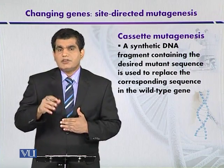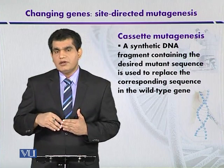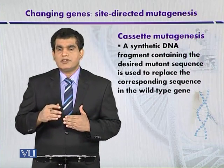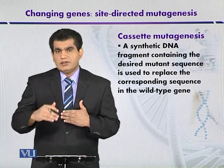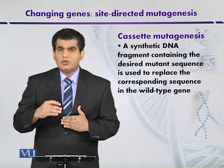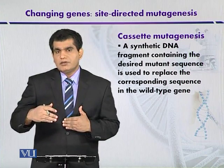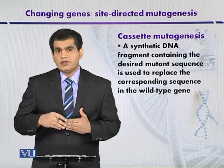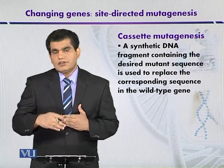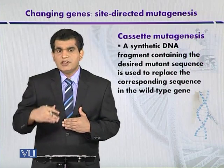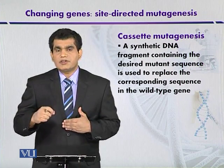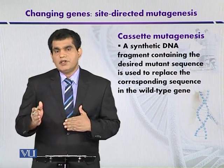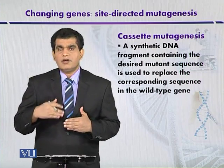In cassette mutagenesis, if the target gene is present within a recombinant vector, it can be mutated. For this purpose, we must have two target sites flanking our target DNA so that, using a restriction enzyme, the wild type DNA fragment can be removed and replaced with a synthetic DNA fragment. In this way, we can achieve DNA alteration efficiency of around 100%. The basic prerequisite is that target sites for restriction endonuclease must be available, so we can remove the wild type DNA fragment and replace it with our own synthetic fragment of our choice of sequence.